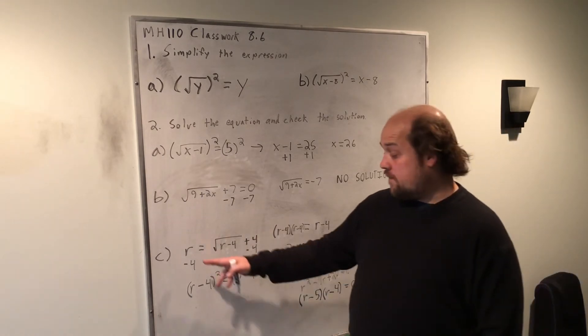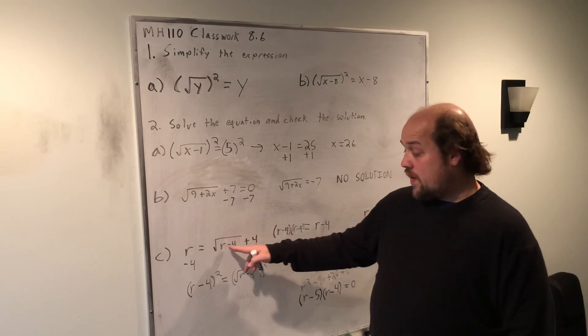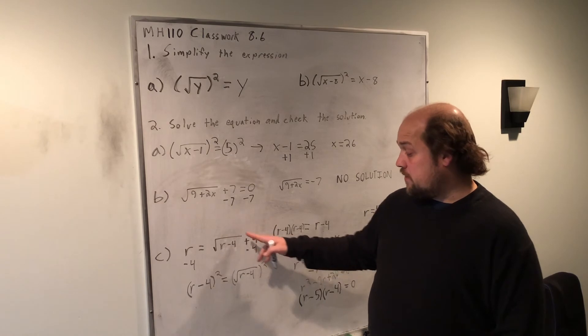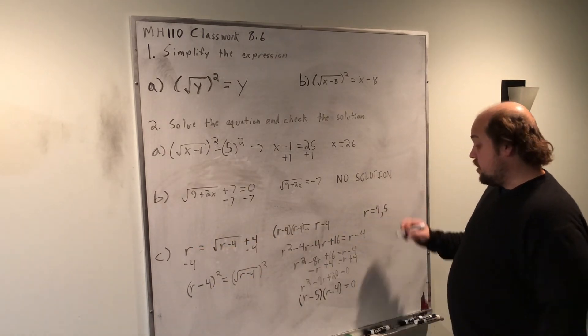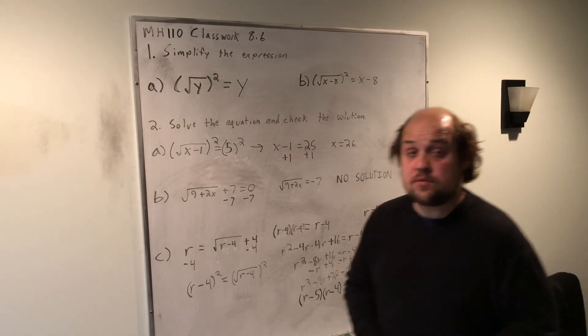If I plug in 5, 5 equals the root of 5 minus 4 plus 4. Well, 5 minus 4 is 1. The root of 1 is 1. And 1 plus 4 does give me 5. So, both are valid solutions that I can count as not extraneous solutions, but actual solutions to this problem.